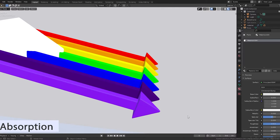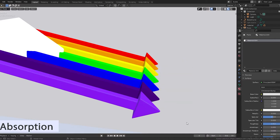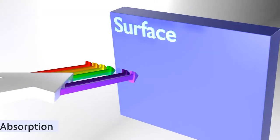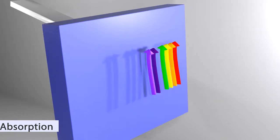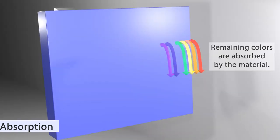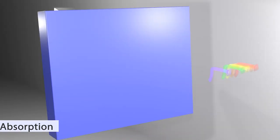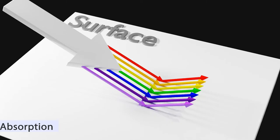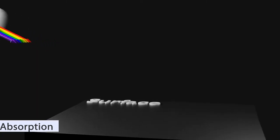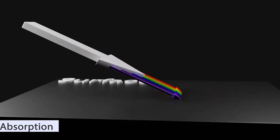Visible white light is comprised of colors red, orange, yellow, green, blue, indigo, and violet, with each color of light having its own frequency. When a material matches the frequency of a color, it absorbs it. Colors that are not absorbed are reflected back, resulting in the color that we see. If an object reflects all of the visible spectrum, it appears white. If an object absorbs the entire spectrum, it appears black.